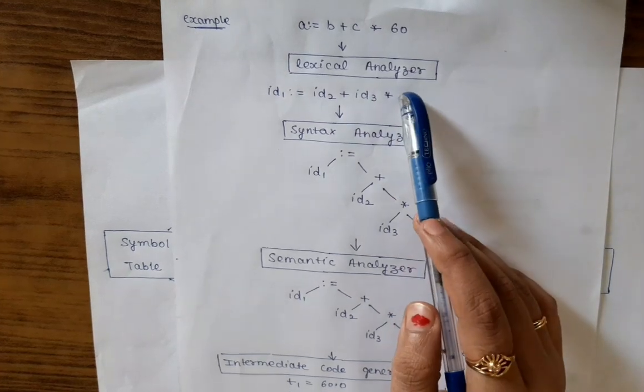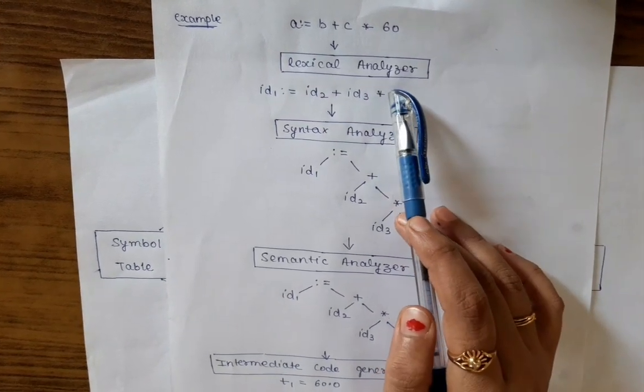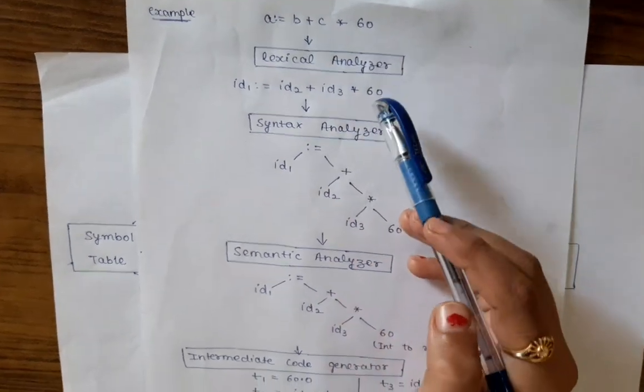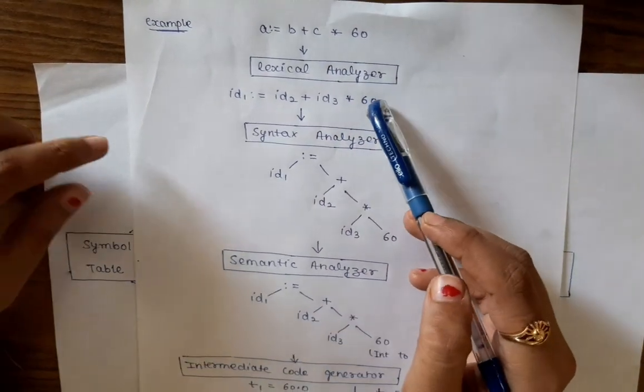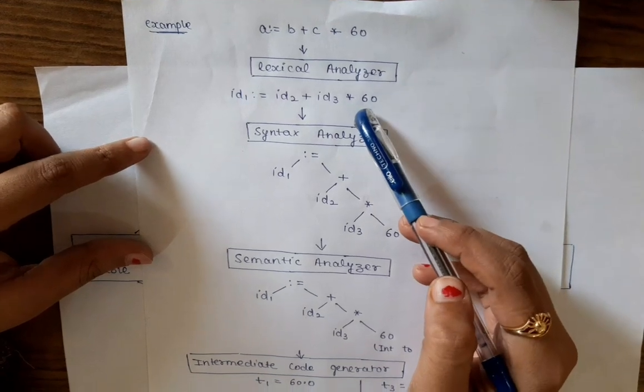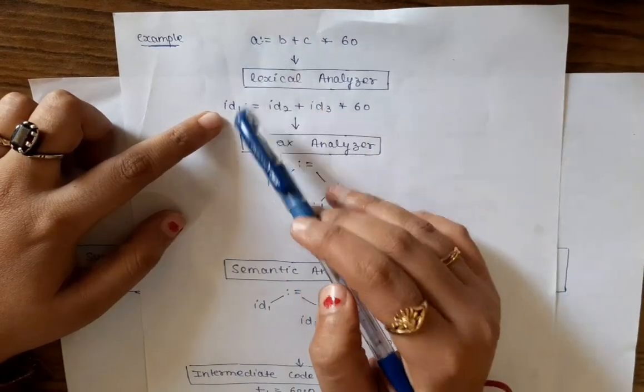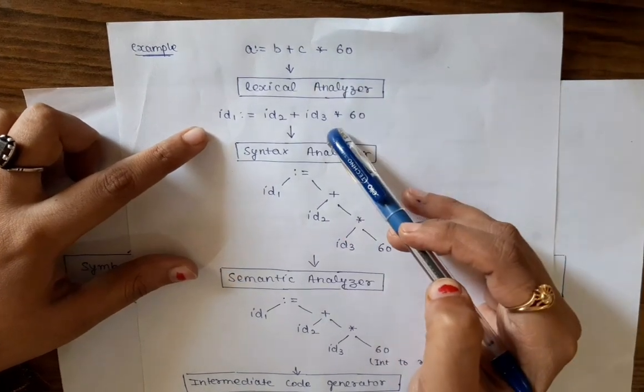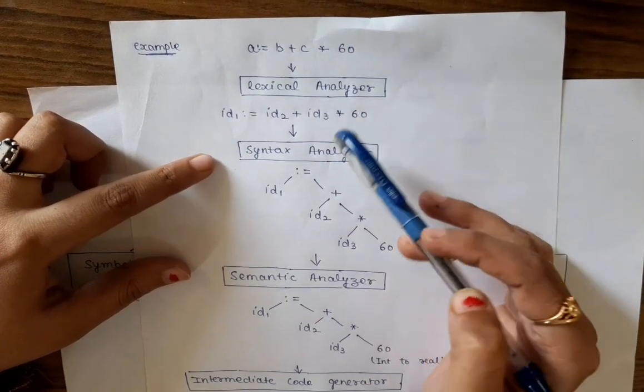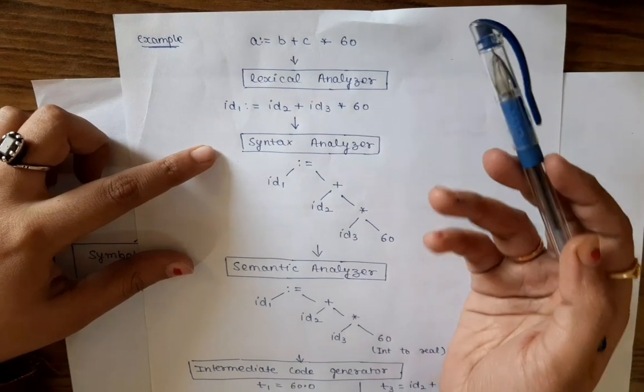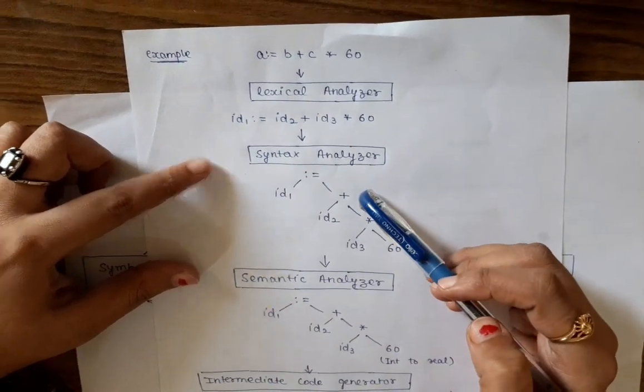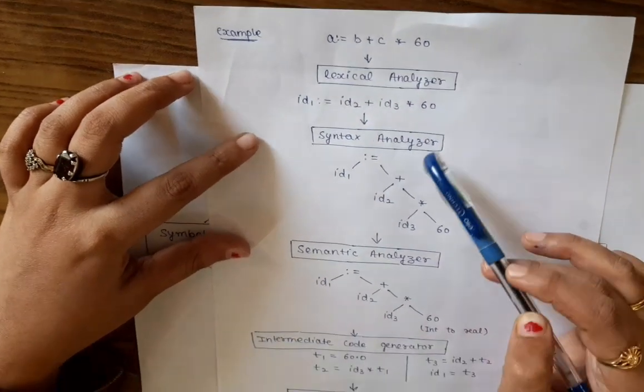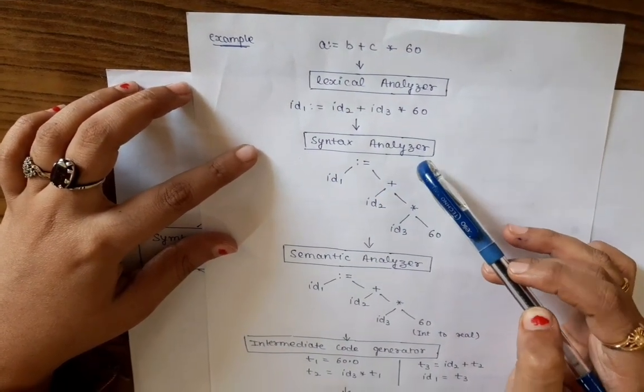So in lexical analyzer, as we know, it is the initial phase of the compiler. It scans the input. It is also called the scanner. It helps to generate the tokens. Here A is identifier 1, B is identifier 2, C is identifier 3. Now these tokens go towards the syntax analyzer. These are the tokens which go to the syntax analyzer as the input.